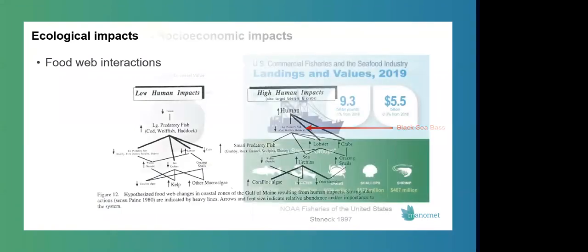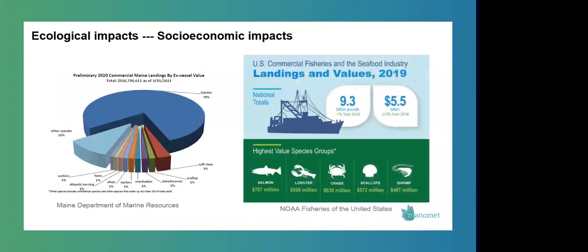But with the emergence of black sea bass, we're now adding a new fish predator to this system. So this is where we see ecological impacts potentially leading to socioeconomic impacts. The lobster fishery is the most important fishery in the Gulf of Maine. It accounts for 79% of the value of commercial species in Maine, which is shown here in this pie chart on the left. But it's also the second most valuable fishery in the US shown in this diagram on the right. So anything impacting the health of this fishery is going to have far reaching socioeconomic impacts.